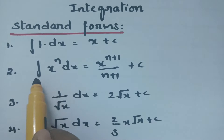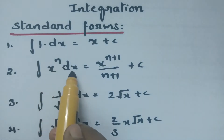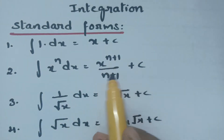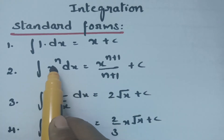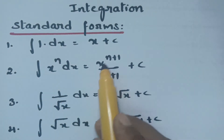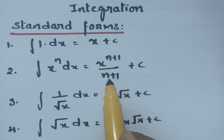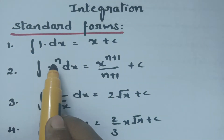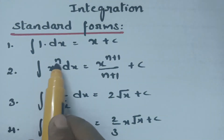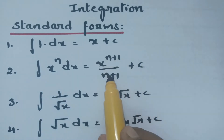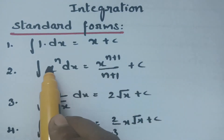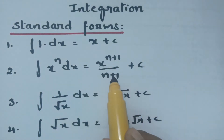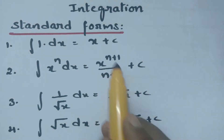Integral of x^n dx is nothing but x^(n+1) / (n+1). For instance, if n = 2, integral of x² dx is x³/3 plus c. If n = 3, integral of x³ dx is x⁴/4. If you take x⁵, it will be x⁶/6. This is very easy to solve.